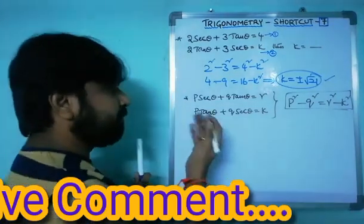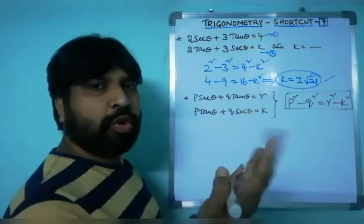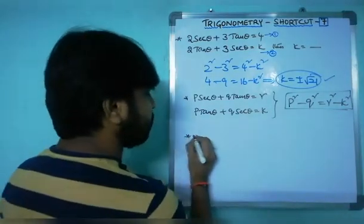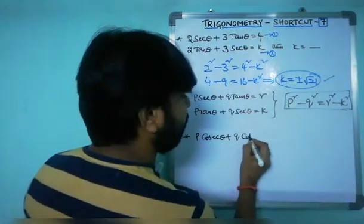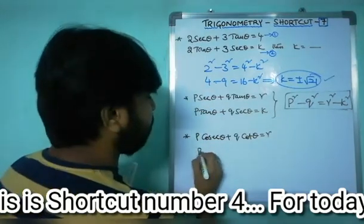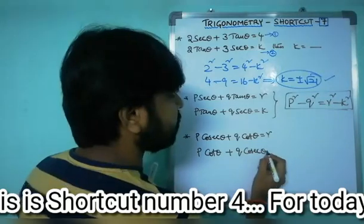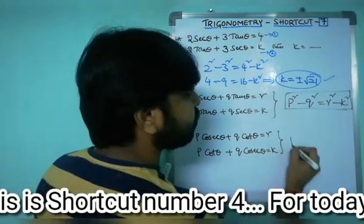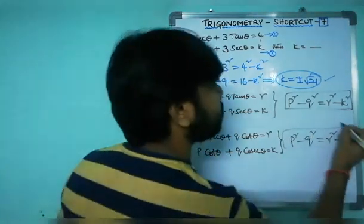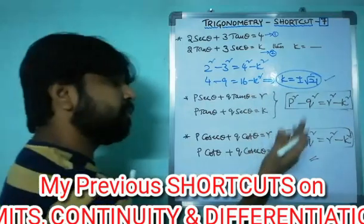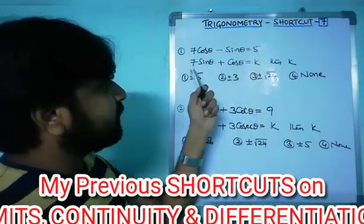Similarly, there is one more combination — using cosecant and cotangent. If p cosec θ + q cot θ = r and p cot θ + q cosec θ = k, it follows the same formula: p² − q² = r² − k². So across sine-cosine, secant-tangent, and cosecant-cotangent combinations, you can remember these shortcuts very easily.